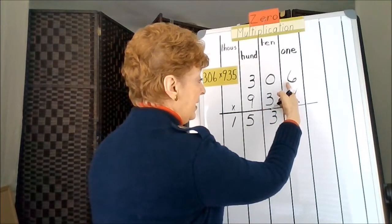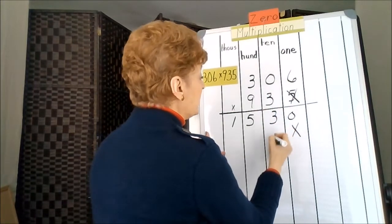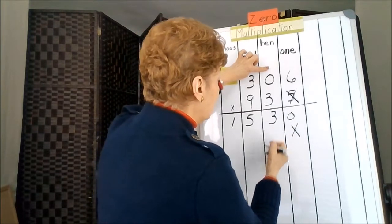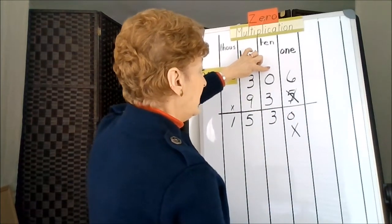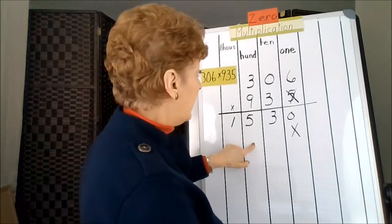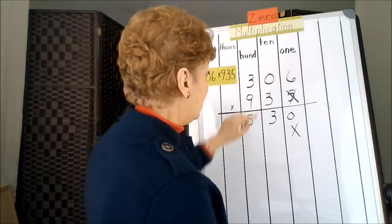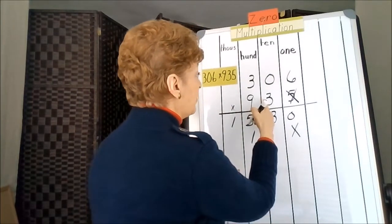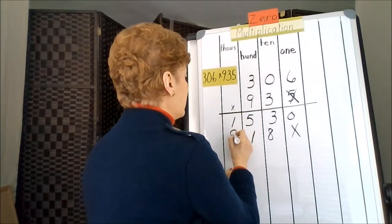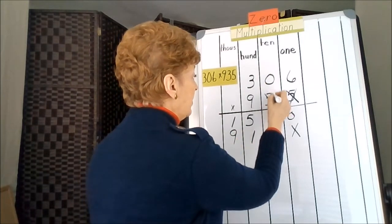3 times 6 is 18. It would be put down the 8, carry the 1. 3 times 0 is 0, plus 1 is 1. But I can say 3 times 6 is 18. 3 times 3 is 9. I'm done with the 3.